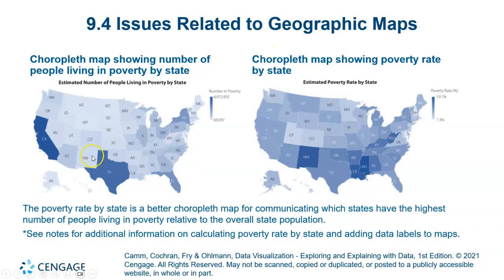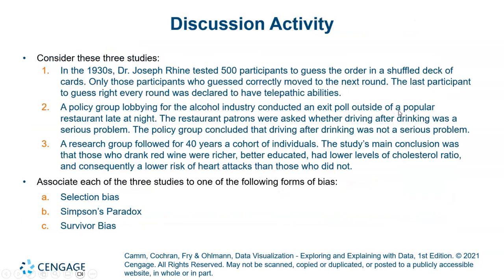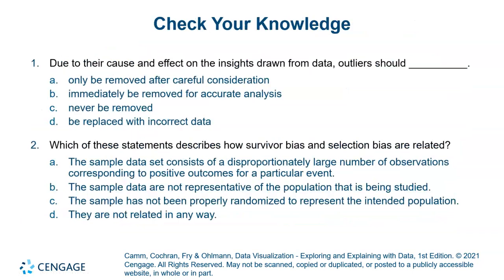Last but not least, a choropleth map is better for communicating poverty rate by state — showing which states have the highest number of people living in poverty relative to overall state population. This map gives more information compared to a standard chart. There is an activity for you to check your knowledge and share your answer in the comments.